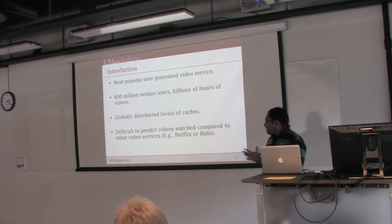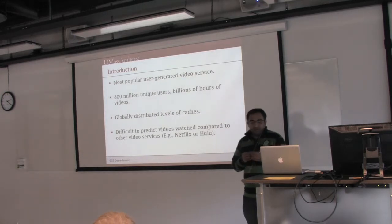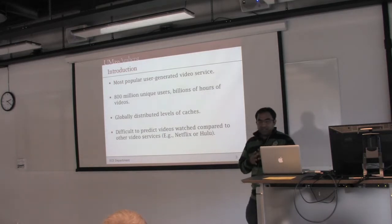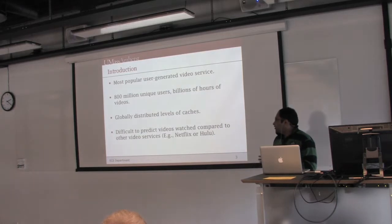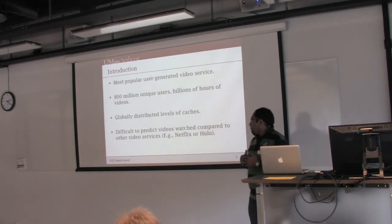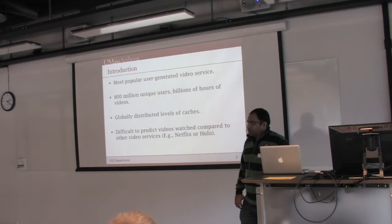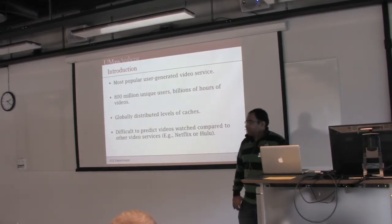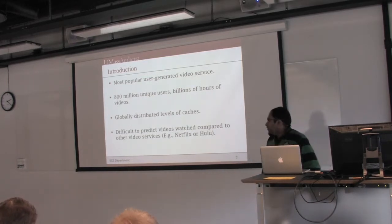This makes it difficult to have an effective caching scheme for YouTube, whereas it's not the same for Netflix or Hulu, which contain far less content — hundreds of videos compared to billions on YouTube. Also, Netflix and Hulu are professionally produced content where they know when they will produce new content, whereas YouTube is user-generated and cannot predict what users will watch.